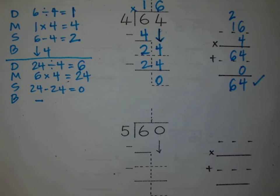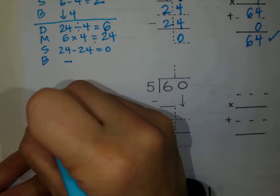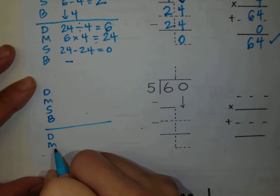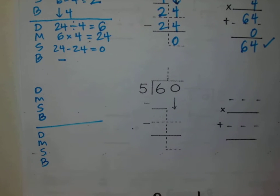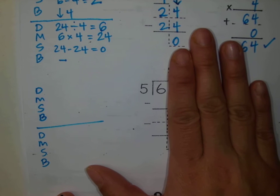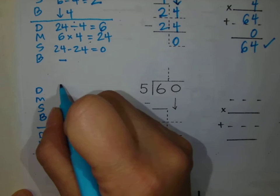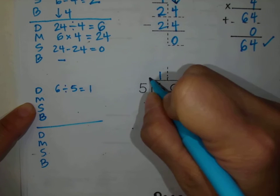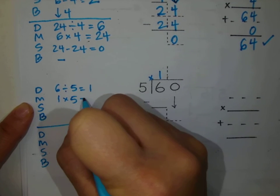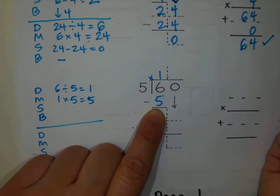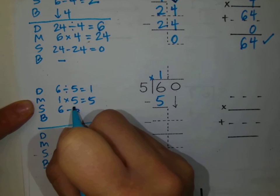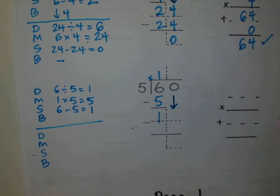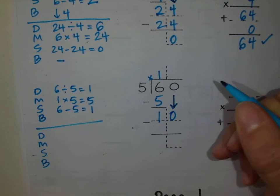Let's go on to the next problem: 60 divided by 5. I'm going to write up my DMSB steps here, and I know I'm going to have to repeat these steps too. First step — daddy divide: 6 divided by 5 equals 1. My 1 goes there. Second step — mommy multiply: 1 times 5 equals 5. Third step — sister subtract: 6 minus 5 equals 1. Fourth step — brother bring down: I'm going to bring down the 0.